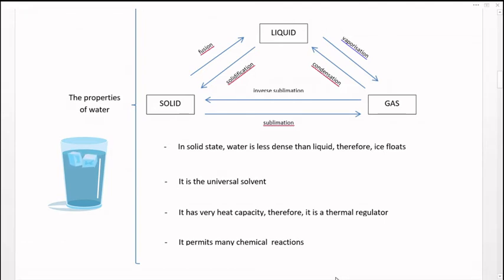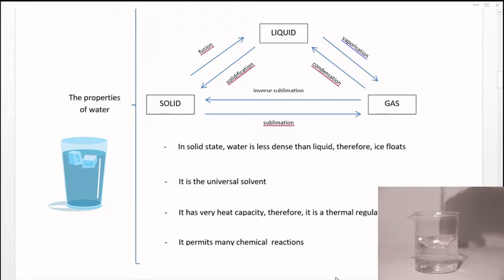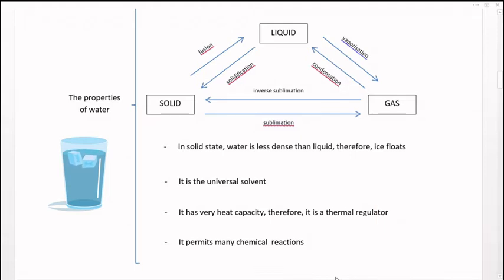And finally, it permits many chemical reactions. Para que las reacciones químicas se produzcan, la mayoría de ellas tienen que ser en presencia de agua. Nuestras reacciones bioquímicas que se producen en nuestro metabolismo requieren de la presencia de agua. Por eso es absolutamente fundamental e imprescindible que bebamos agua. Porque sin agua no hay metabolismo, y sin metabolismo no habría vida.